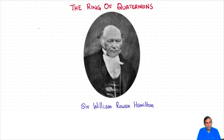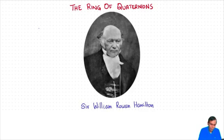Hamilton was not able to do that. But one day he suddenly realized that if instead of triples you take quadruples of real numbers, then you can find a ring. Let us see how Hamilton did this.